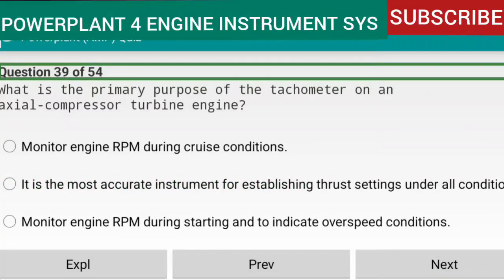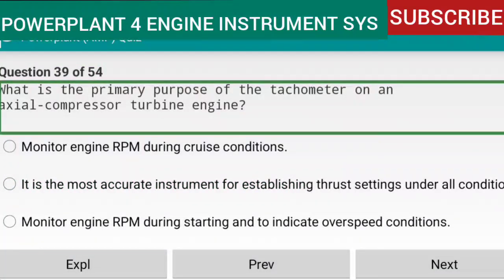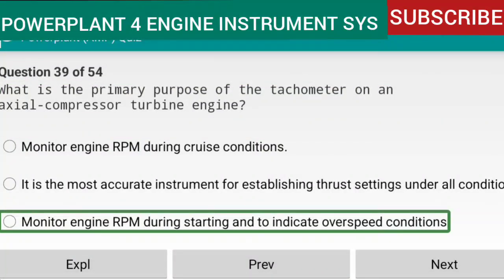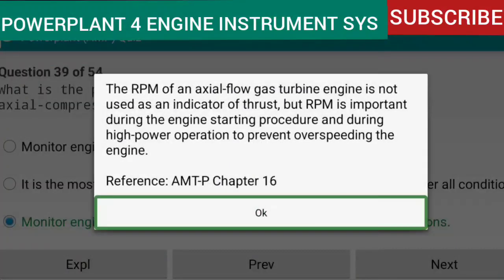Question 39 of 54: What is the primary purpose of the tachometer on an axial compressor turbine engine? Answer: to monitor engine RPM during starting and to indicate overspeed conditions. The RPM of an axial-flow gas turbine engine is not used as an indicator of thrust, but RPM is important during the engine starting procedure and during high power operation to prevent overspeeding. Reference: AMTP Chapter 16.